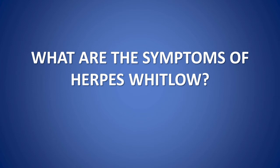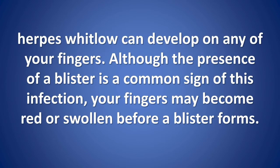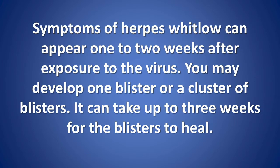What are the symptoms of herpes whitlow? Herpes whitlow can develop on any of your fingers. Although the presence of a blister is a common sign of this infection, your fingers may become red or swollen before a blister forms. Symptoms can appear one to two weeks after exposure to the virus, and you may develop one blister or a cluster of blisters.